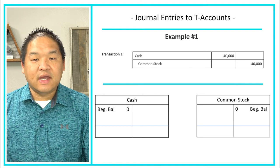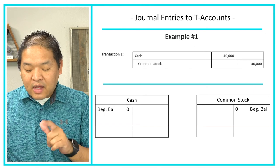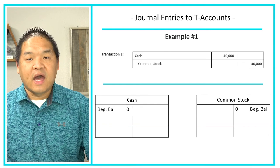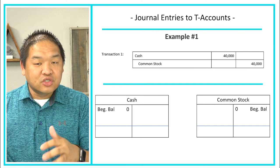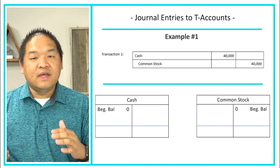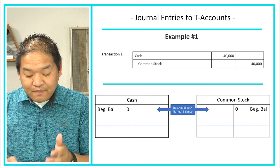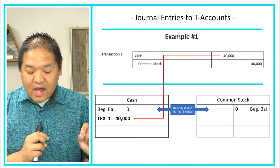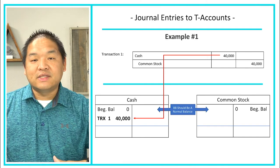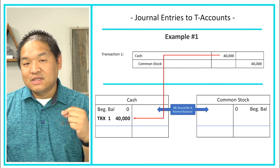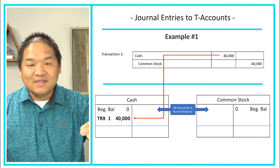Below, we see two T-accounts: cash and common stock. They both have beginning balances of zero because the company just started. We debited cash for $40,000 — debit means left — so we transfer that from the journal to the T-account by putting it on the left side of the cash T. I've put $40,000 on the left side and labeled it TRX1, meaning transaction one, as a reference. If we want to know where that transaction came from, we go to transaction one to see the detail.